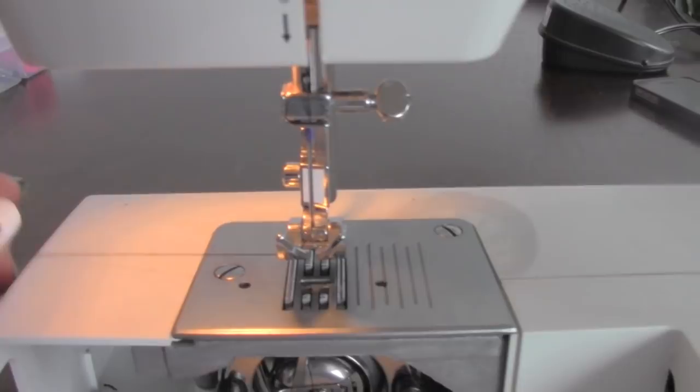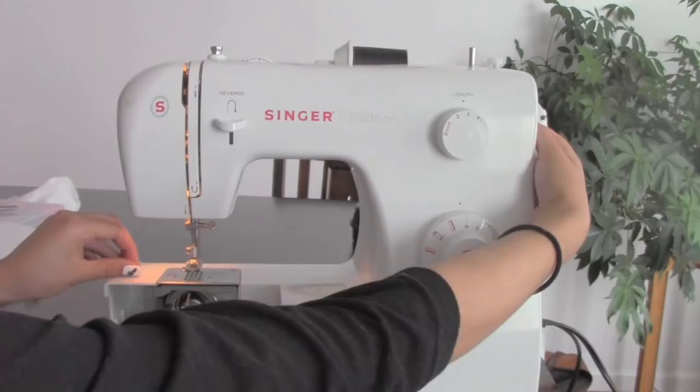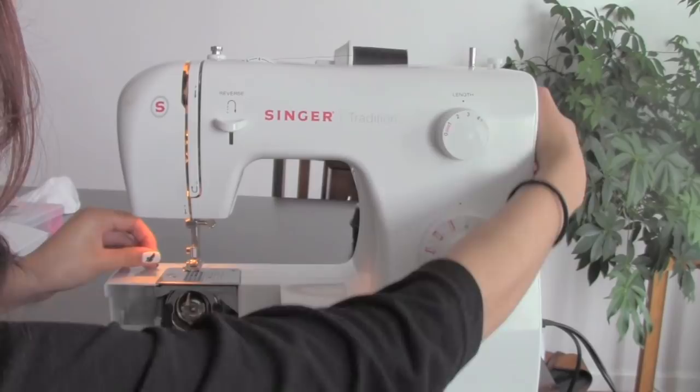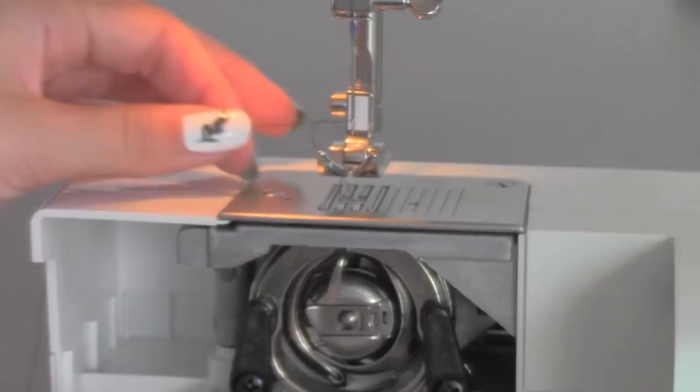Let it hang. Hold the top thread and wind the needle down to pick up this thread using the hand wheel forward. Wind it forward until the needle is back to the top. Now pull the thread. It should stick out like so.